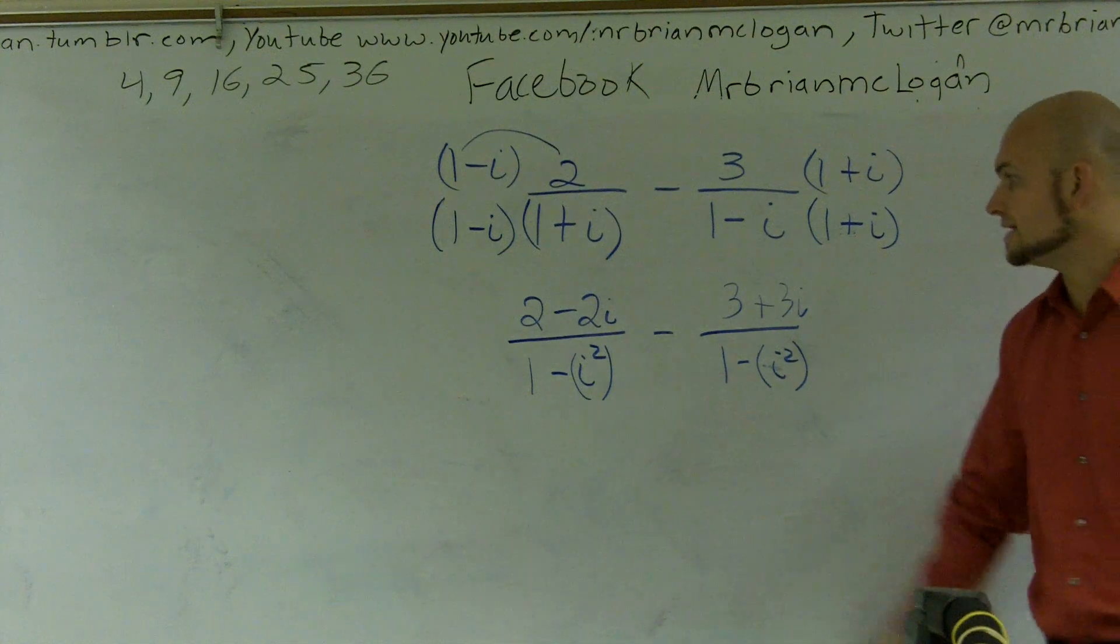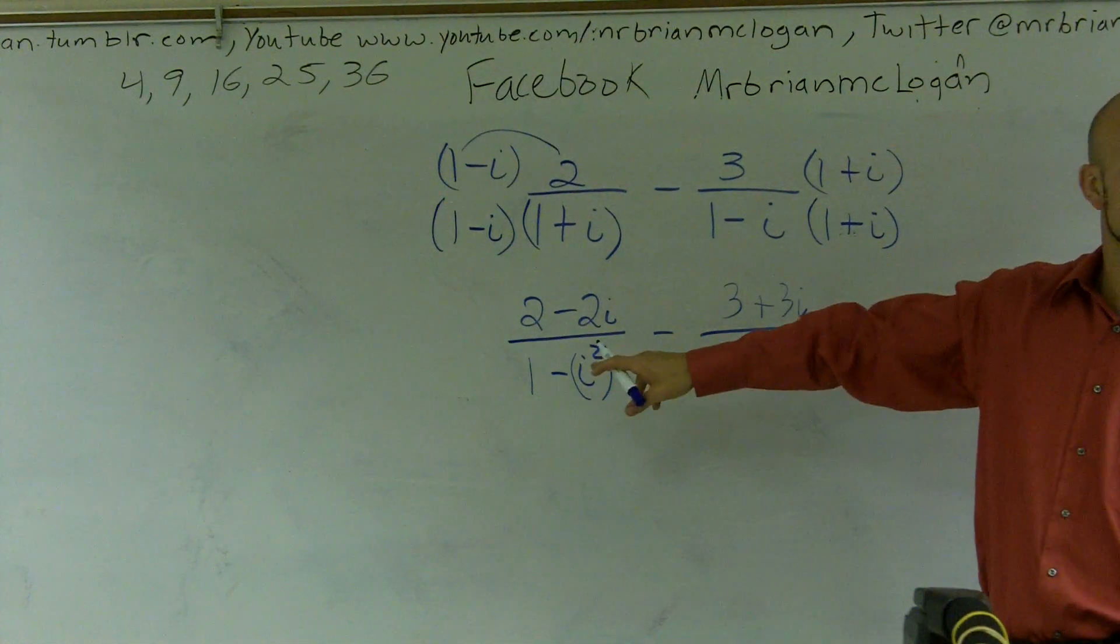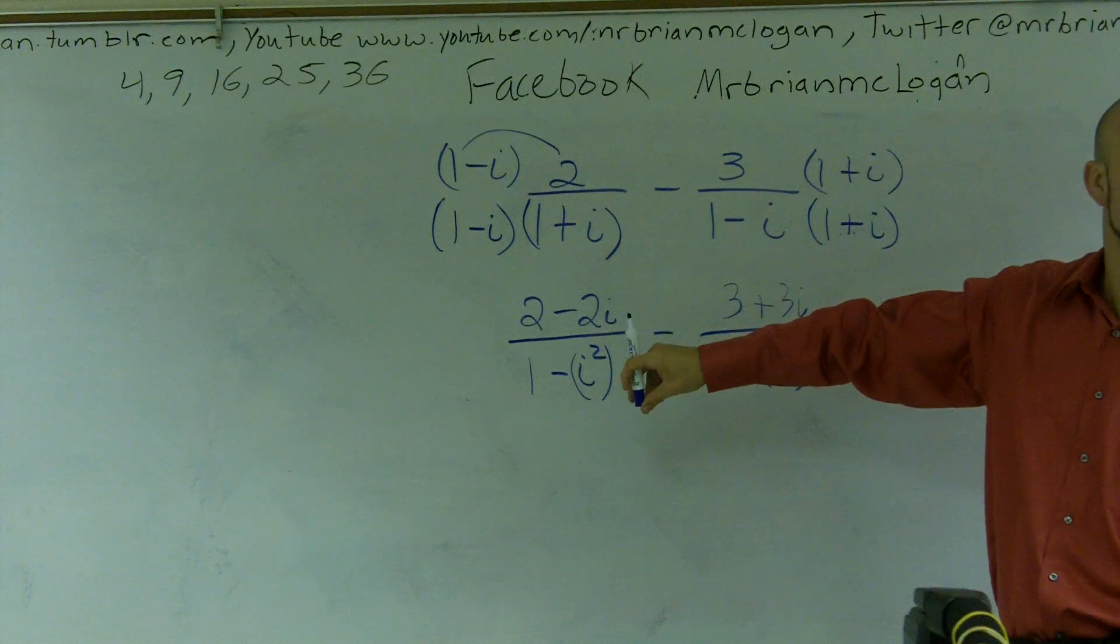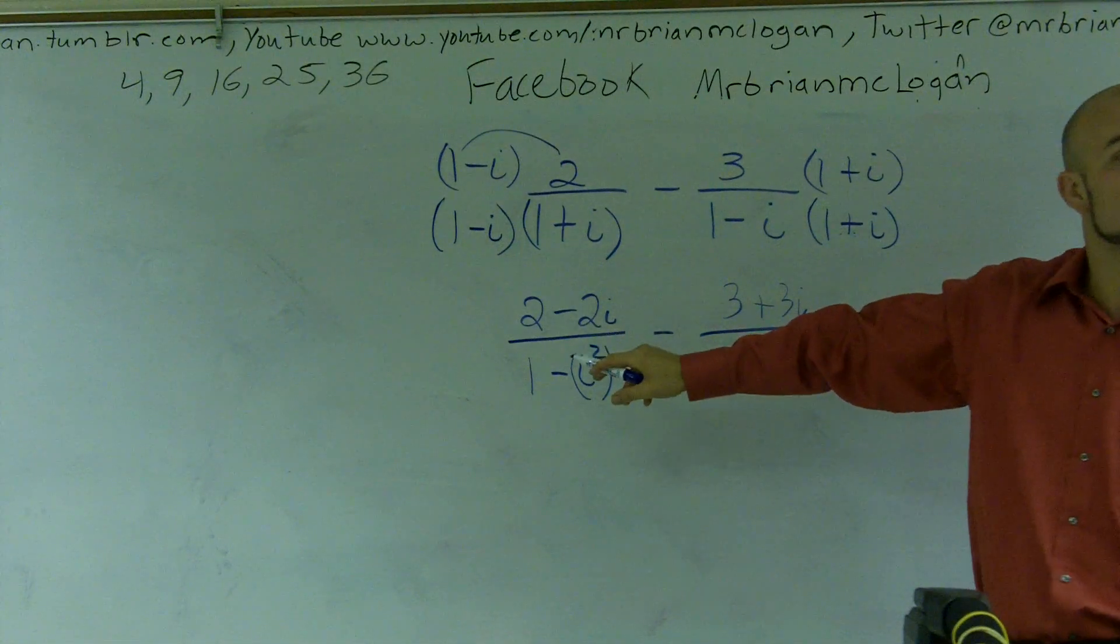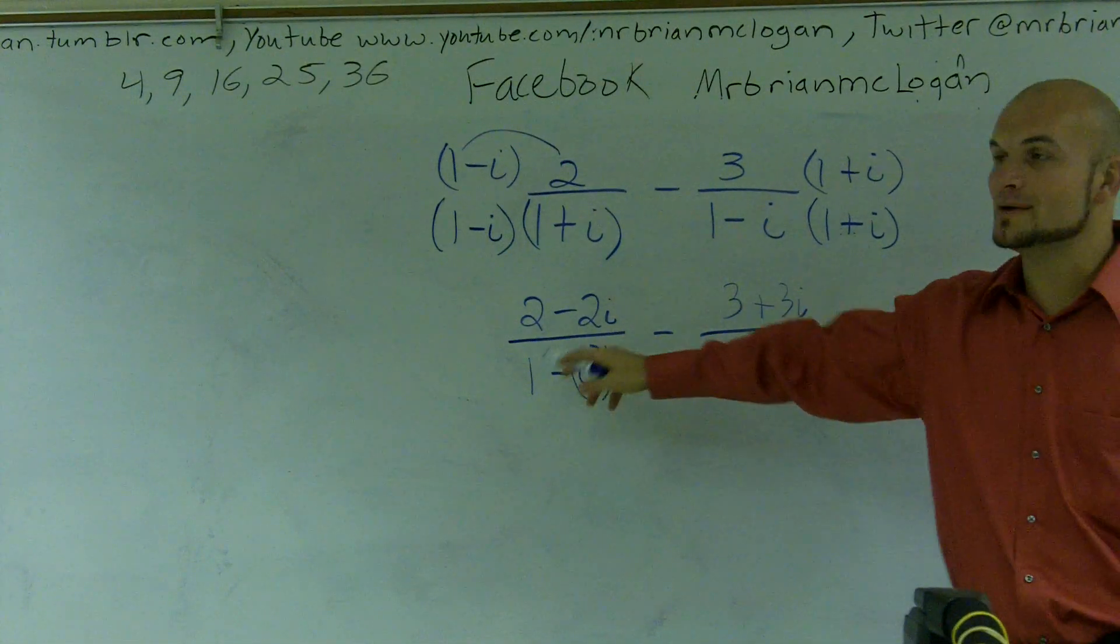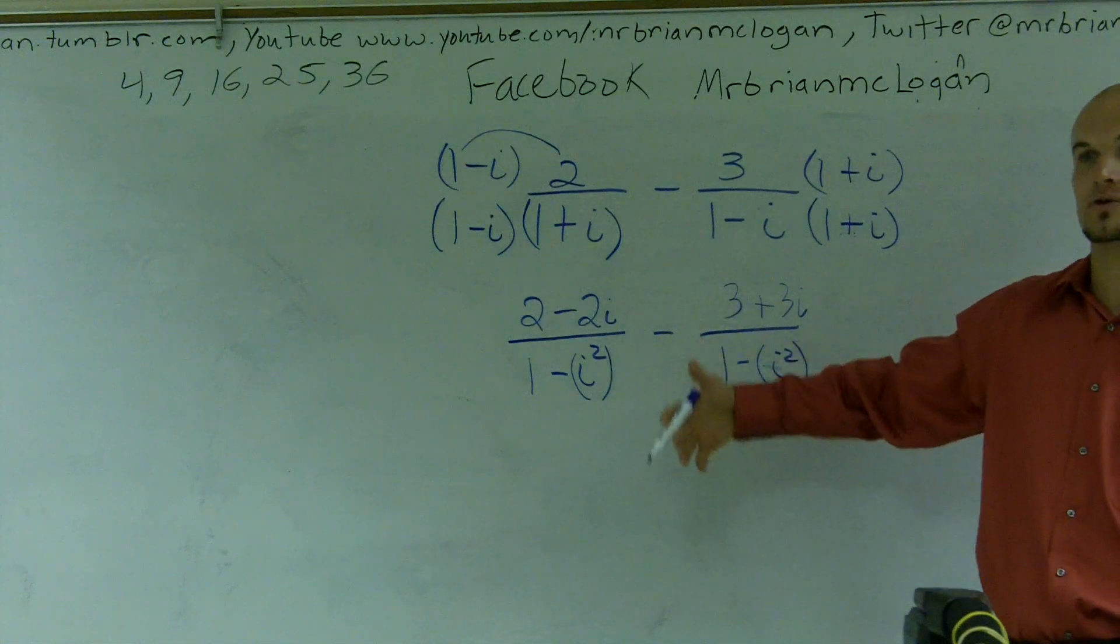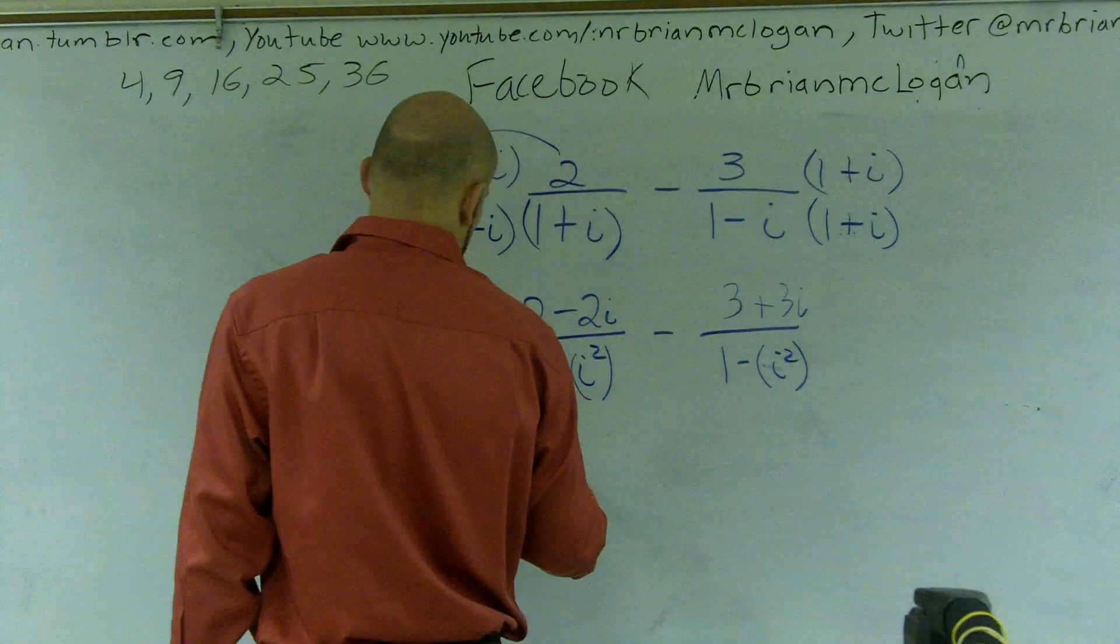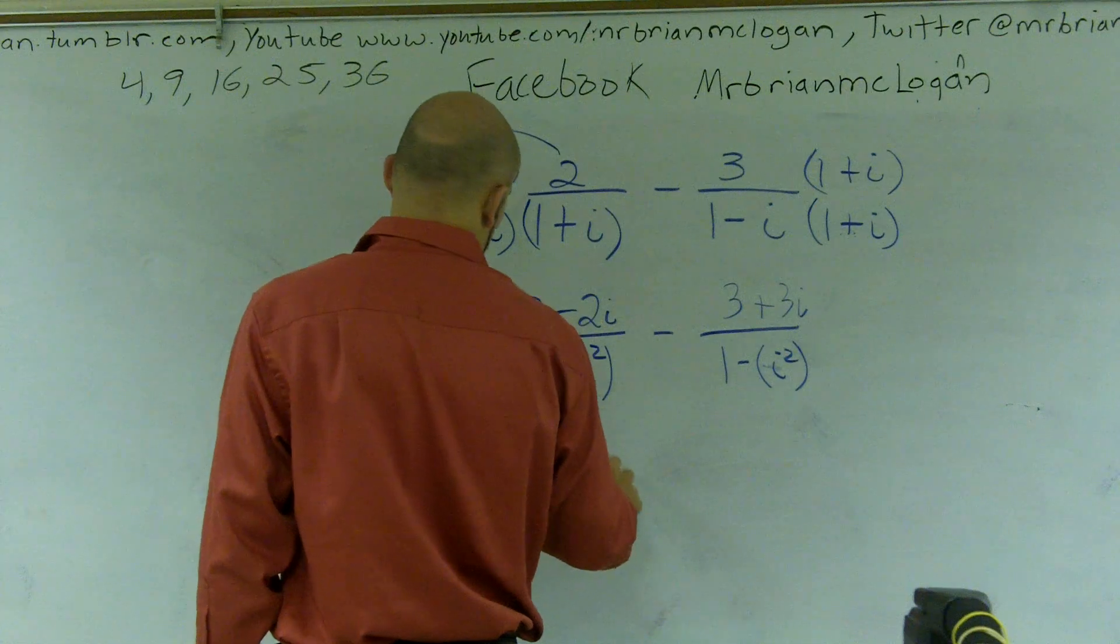Alright? And the last thing we need to remember is i squared. i squared gives you a negative one. So one minus a negative one is going to give you two. So I'll have, so therefore I'm going to have two minus two i.